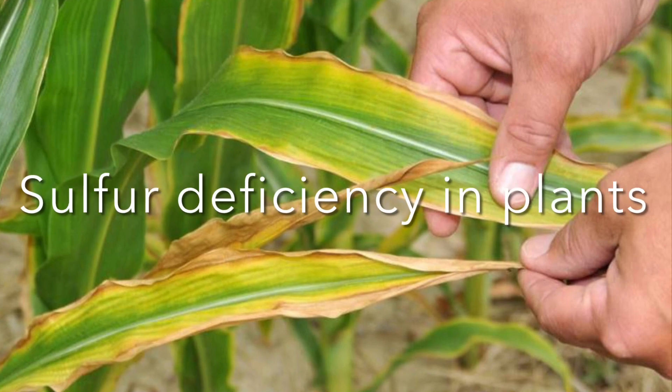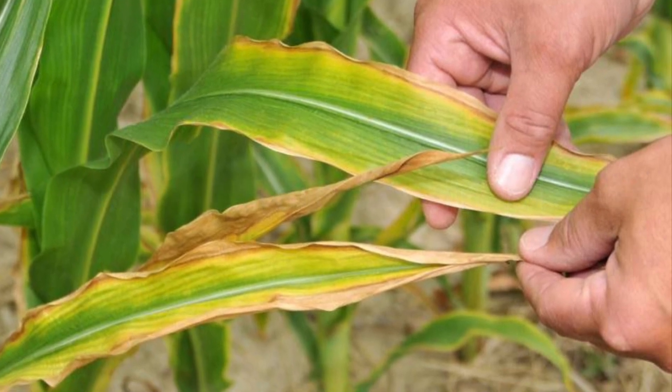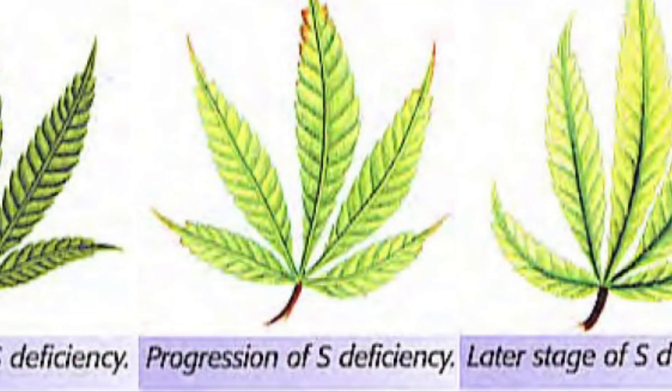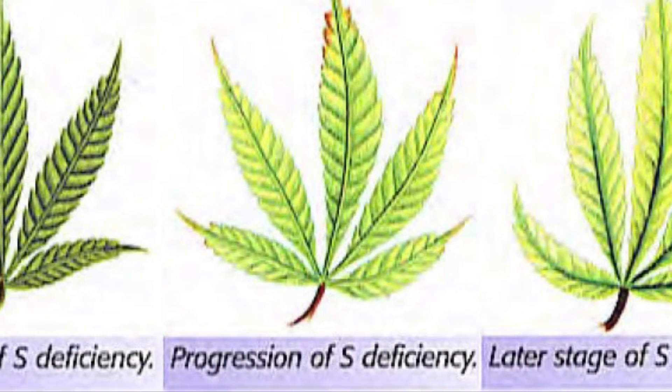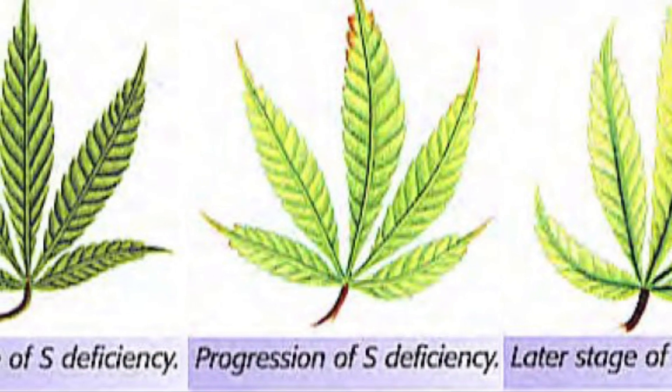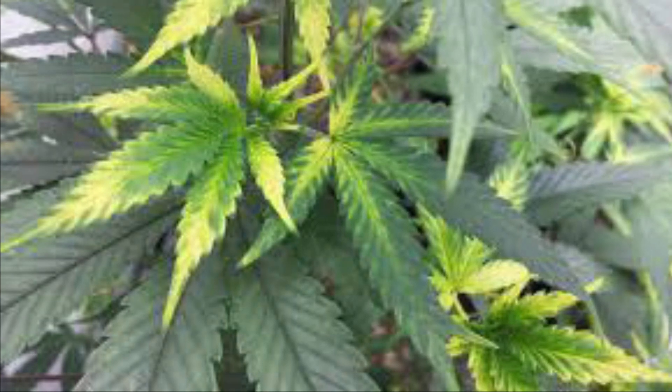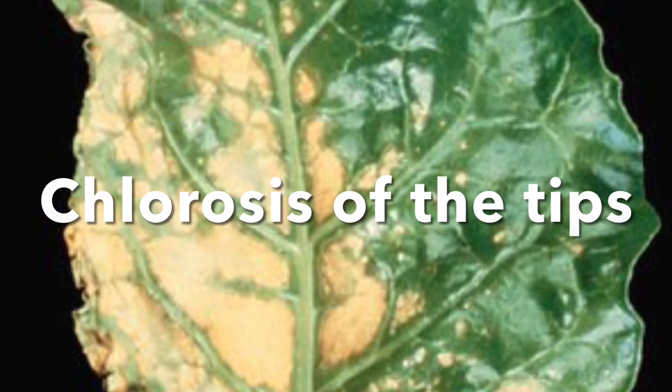So what happens when your plant doesn't get enough sulfur? Sulfur deficiency resembles nitrogen deficiency, such as leaves becoming light, pale yellow or a very light green. Unlike nitrogen deficiency though, it starts with the younger leaves first, which will show with the tips of the leaves turning brown and then working their way back. The plant will become small and spindly with short slender stalks, and sometimes purple spots on top of the leaves and on the bottom.